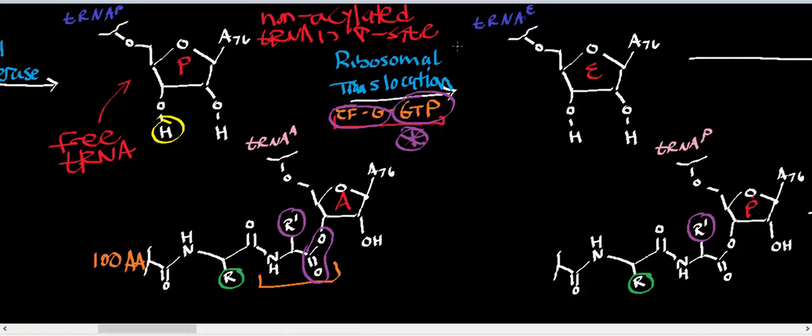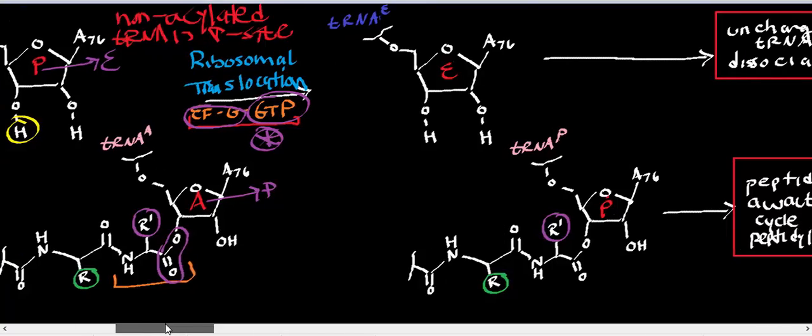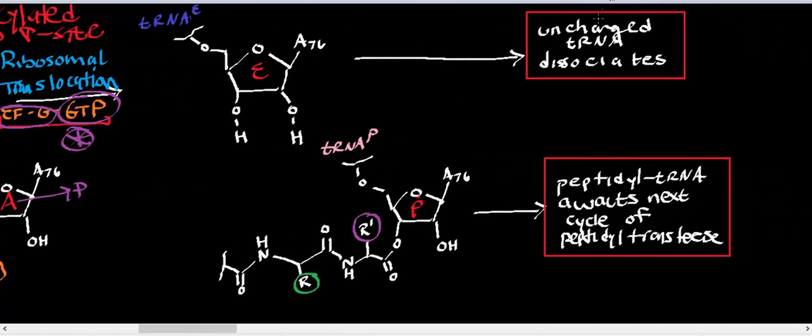Keep in mind what's going to happen is EFGGTP, it's going to cause translocation of the ribosome. And so remember, whatever was in the P site ends up in the E site. Whatever is in the A site ends up in the P site of the ribosome. So effectively what you do by using this EFGGTP G protein is whatever's in the P site goes into the E site, and it dissociates because the E stands for exit.